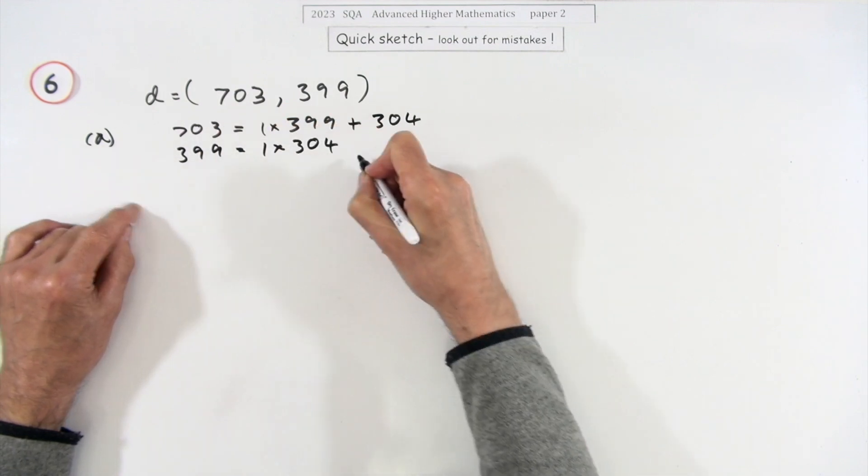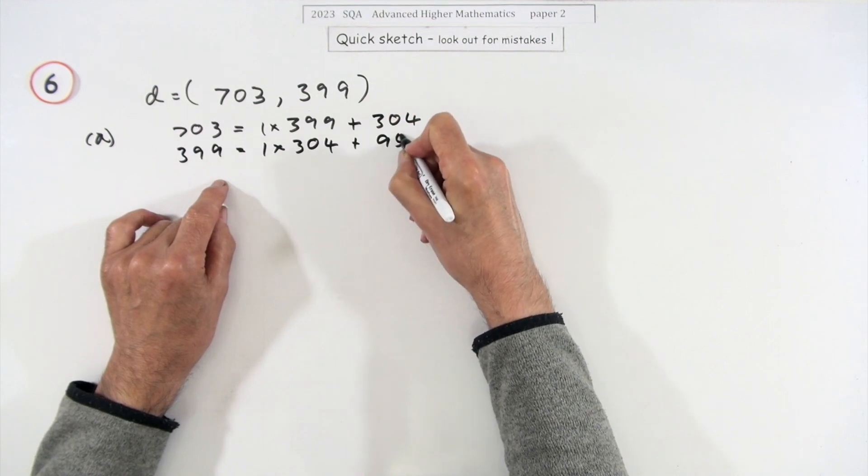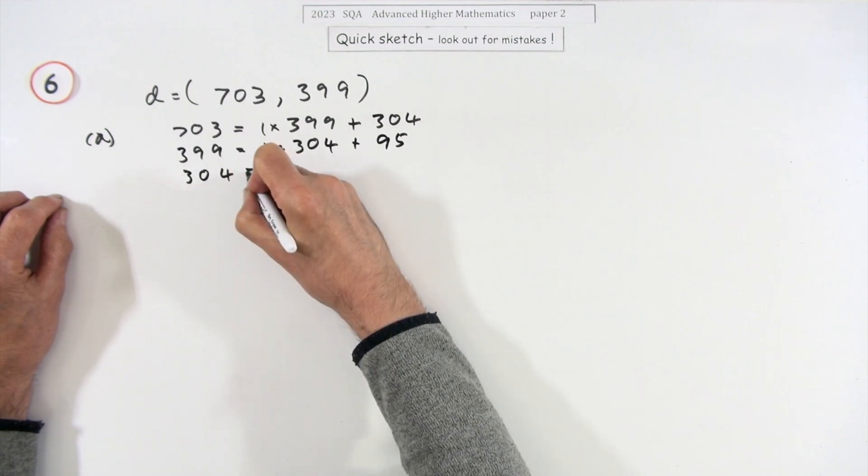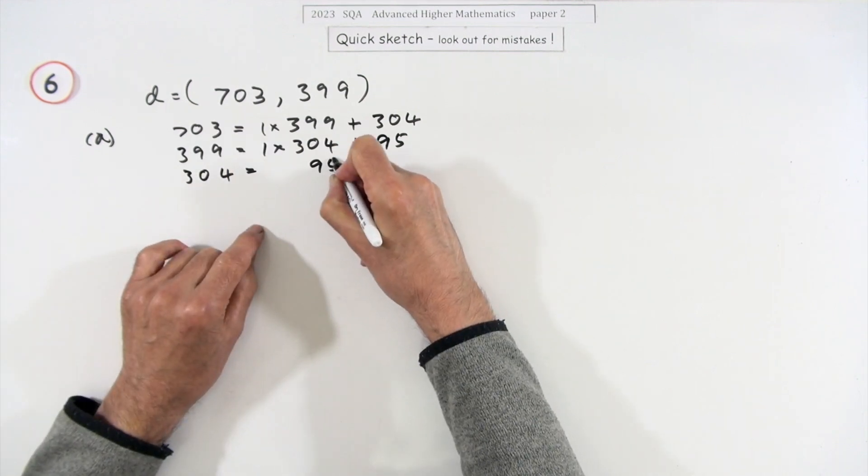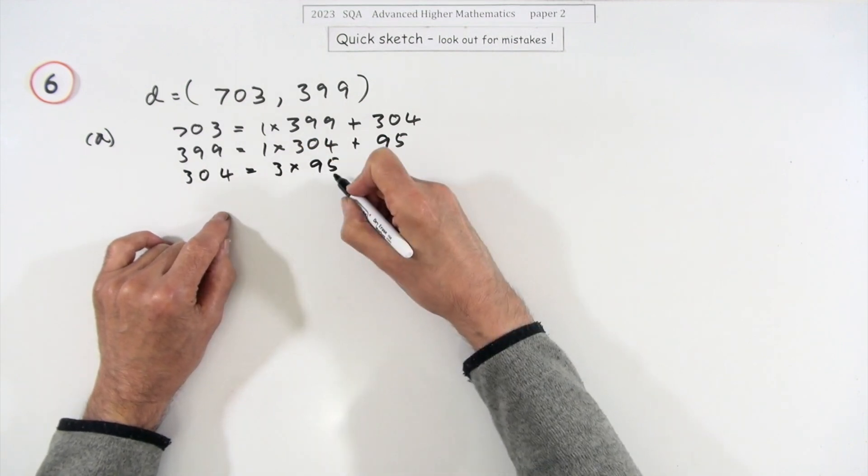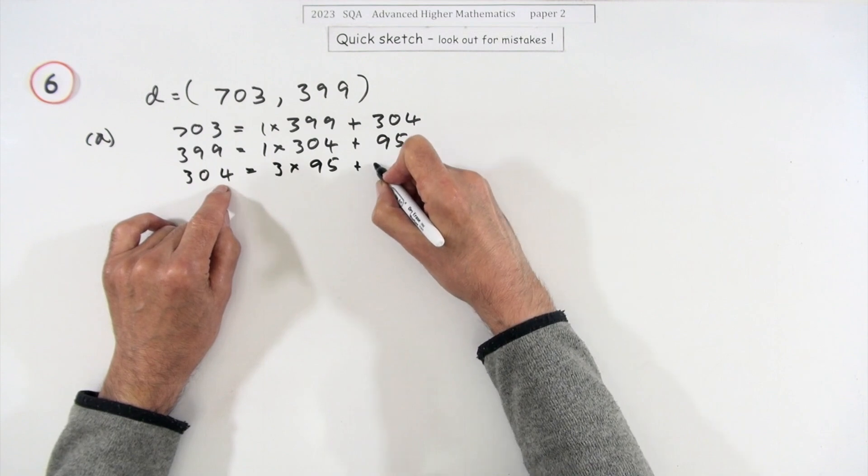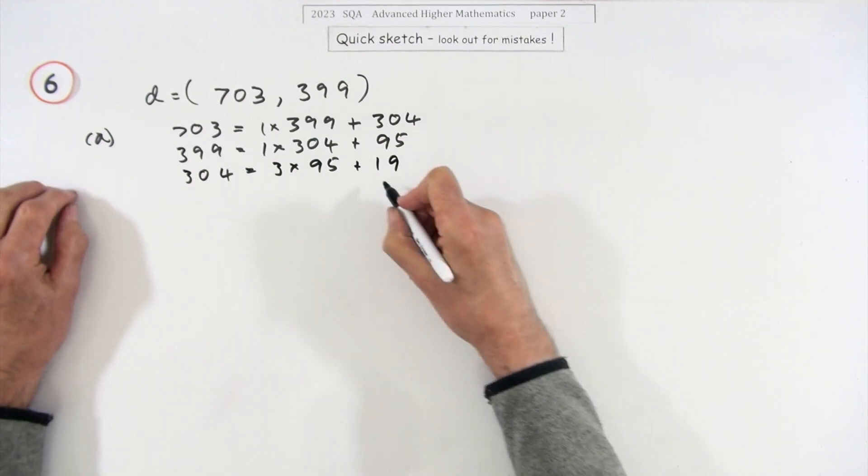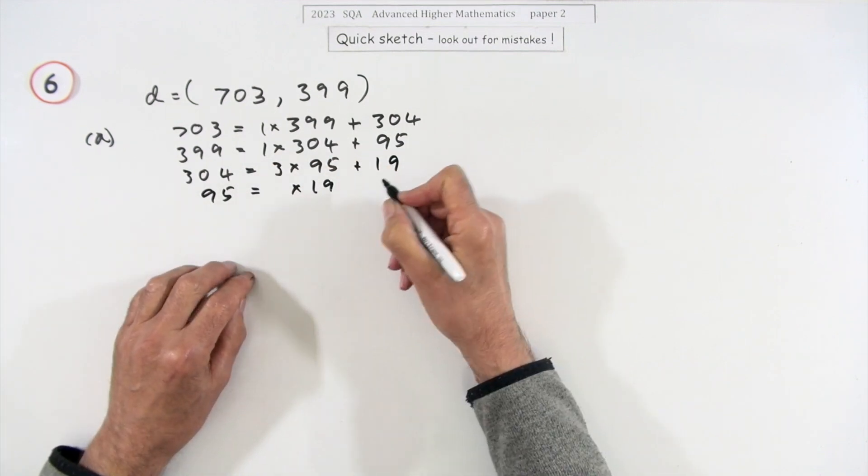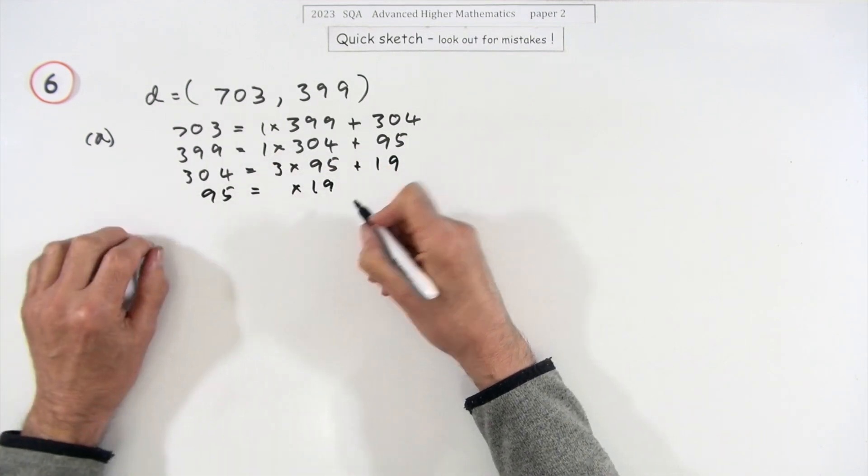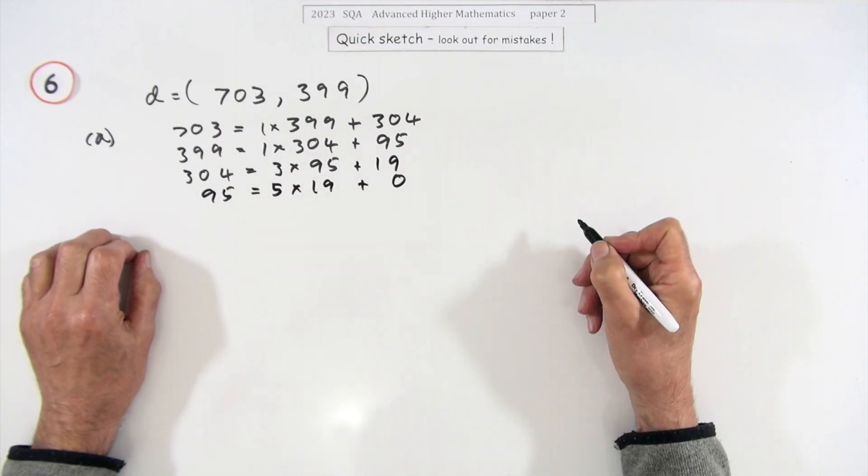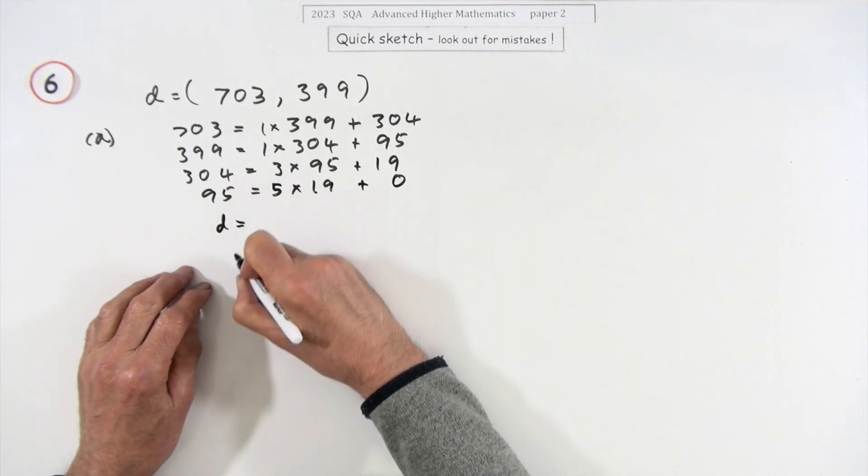And that doesn't go in 399 obviously, it'll just be one lot of 304 so it'll be 95 left over. Well five and four, that won't go in either, so 304, that'll be a certain number of 95. Well that's almost 100, so there can only be three of them, so that's 15 short, plus another, that makes 19. 95, will 19 go into 95? It's almost 100, it's almost 20, five of them. It is five exactly, so plus zero.